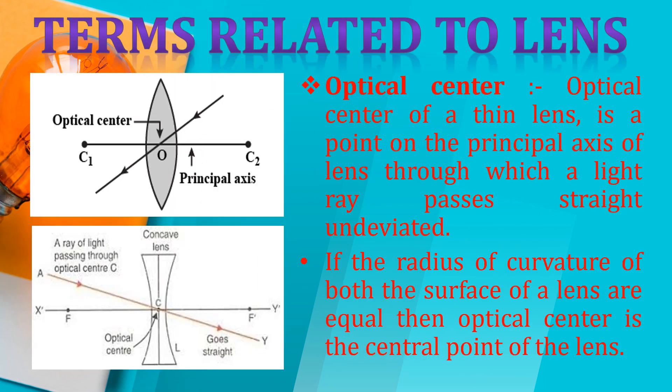If there is a light ray passing through the optical center, it will be undeviated — there will not be any refraction process; it will go straight out. This applies to both our concave lens and convex lens. You can see that the ray of light passing through the optical center is undeviated. If the radius of curvature of both surfaces of the lens are equal, then the optical center is the central point of the lens. The optical center is important — if any light ray passes through the optical center, it will be undeviated.